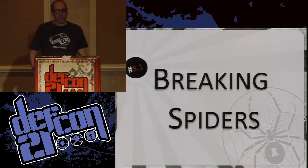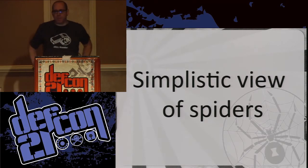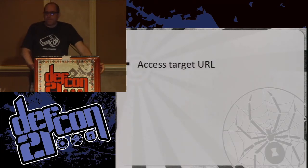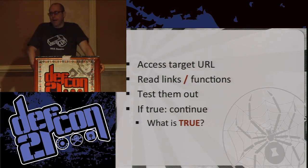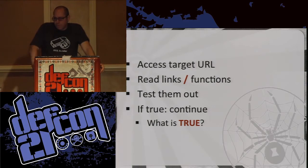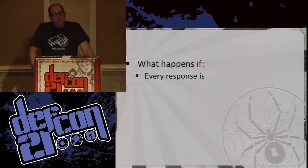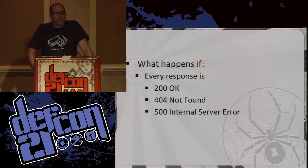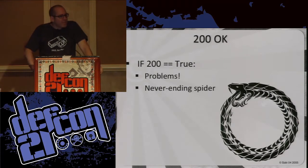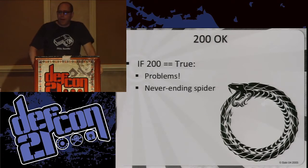Let's talk about spiders. This is a simplistic view: you access the target URL, read the links, test them — if you get a 200 OK that's true, if you get a 404 that's false. But what happens if everything is a 200? Or if everything is a 404? Or if everything is a 500? If everything is a 500, then everything is a SQL injection attack. If everything is a 200, you end up with a never-ending spider — 'I found another directory, I'll just keep scanning and keep scanning.' You get this never-ending spider.